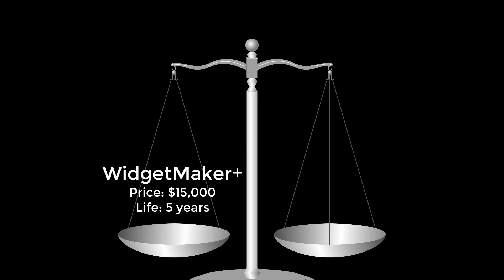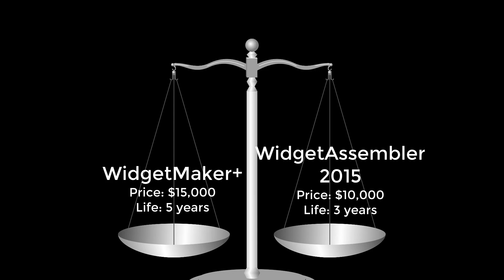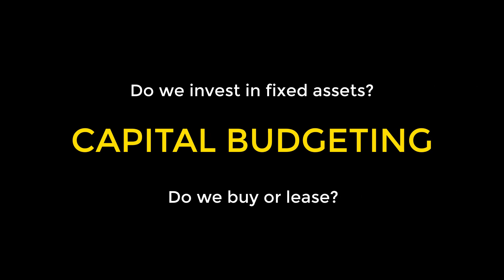Once you have that money, what do you put it into? Obviously you'll need some industrial machines to make the Widget 9000. There are two competing alternatives: the $15,000 Widget Maker Plus, which lasts for 5 years, and the $10,000 Widget Assembler 2015 edition, which lasts for 3 years. Which one you pick depends on which is likelier to make you more money over its lifetime. That sort of question is about capital budgeting — anything regarding the management of a firm's long-term investments, such as what machinery to buy or whether to buy or lease.